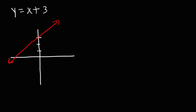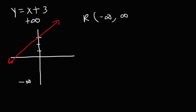This graph keeps on going forever in both directions. To analyze the range you need to look at the y values. The lowest y value is negative infinity and the highest is positive infinity. So the range for any linear function is going to be negative infinity to infinity — this applies whenever the leading term is x to the first power.